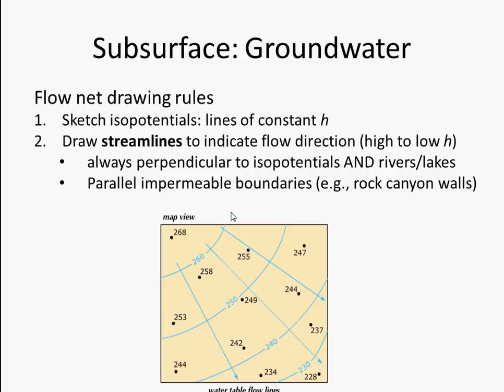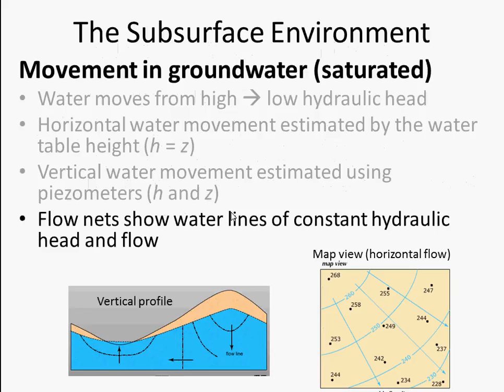Flow lines also move parallel — perhaps unsurprisingly — to impermeable boundaries. So if you've got an aquifer bounded on either side by rock canyon walls, the water is going to move parallel to those rock canyon walls. So flow nets are just a way to show lines of constant hydraulic head and the flow of that water.